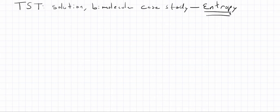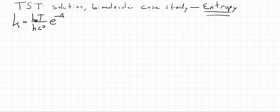Let's continue our case study of transition state theory, looking specifically at the case of a bimolecular solution phase reaction. We're going to look at the rate constant equation: k is equal to kT over hc, times e to the minus delta G double dagger over RT.